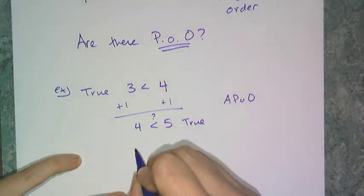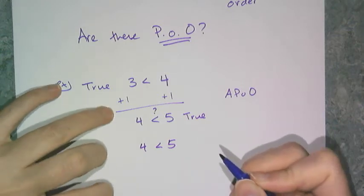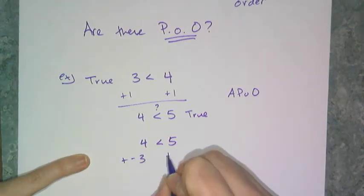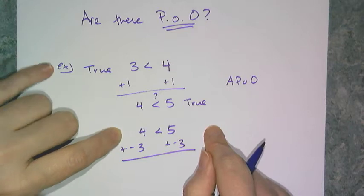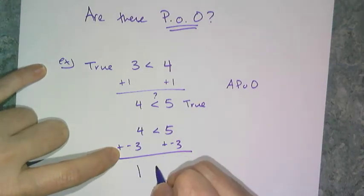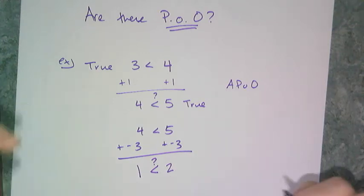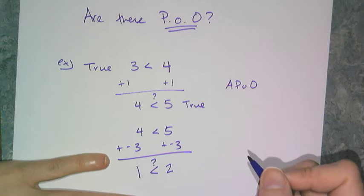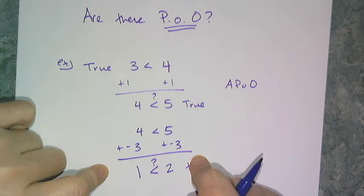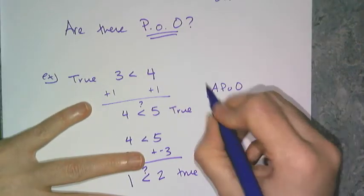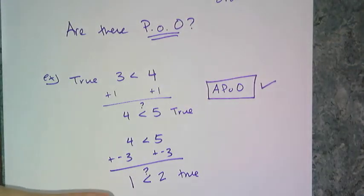Now let's check adding another type of number. I added a positive number, so now let's add a negative number and see if the order is still true. 4 plus negative 3 is 1, and is that less than 5 plus negative 3, which is 2? Yes — 1 is still less than 2. So I can add a positive or a negative number to both sides of an inequality and it's still true. Therefore the addition property of order works just like the addition property of equality. I have APO.